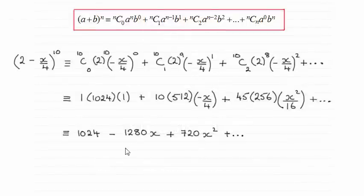Hi there. Now in this question we had to use the binomial expansion formula to expand 2 minus x over 4 all to the power 10 in ascending powers of x, working out the first three terms. So as you can see the answer is 1024 minus 1280x plus 720x squared.